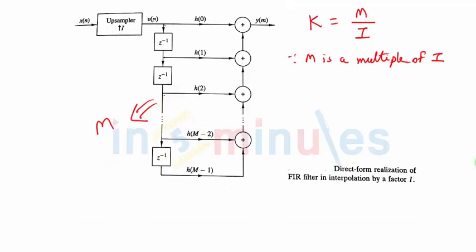To understand this whole thing, let's consider an example. I am saying that let I is equal to 2 and M is equal to 4. So if I is equal to 2 and M is equal to 4, then K which is M by I will be 4 by 2 equal to 2.